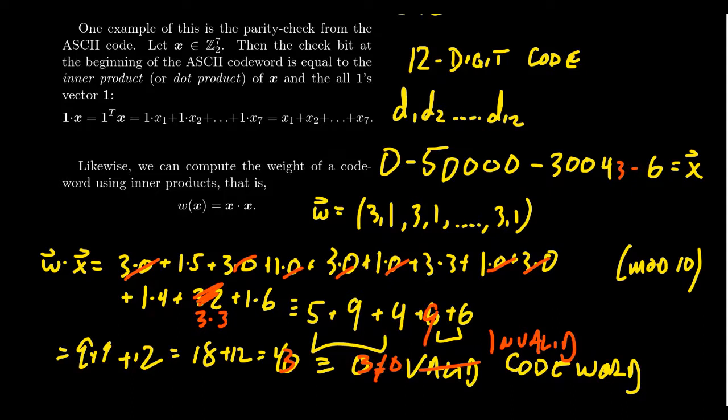So the detection of error comes down from this dot product process. The UPC is just one example. The ASCII code words also have this dot product built into it. ISBN codes, that is international standard book numbers, that's a 10 digit code, for which you have a sequence of numbers. Your weights look like 10, 9, 8, 7, 6, 5, 4, 3, 2, 1. And you have to calculate the dot product mod 11. It works very similar. We can use dot products to check codes with check bits and things very similar to that.